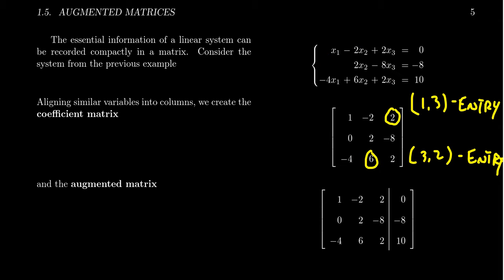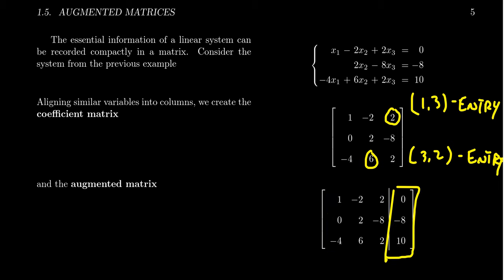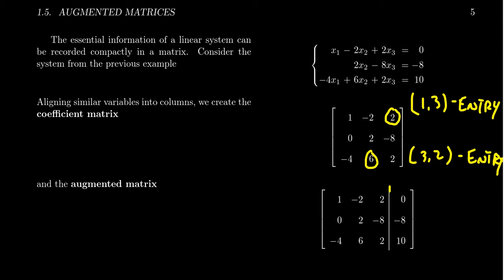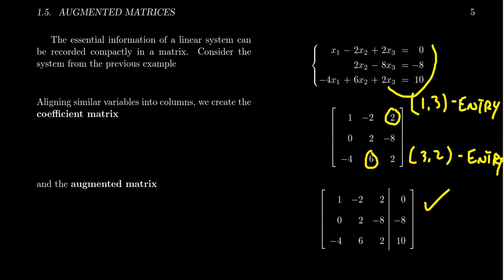To create the augmented matrix, you take the coefficient matrix and augment one extra column at the end corresponding to the right-hand side of the system. We also add a vertical line to separate the coefficient matrix from this augmented column — the vertical line corresponds to the location of the equal signs. Each row of this augmented matrix encodes one equation, so the entire linear system is encoded in the matrix.